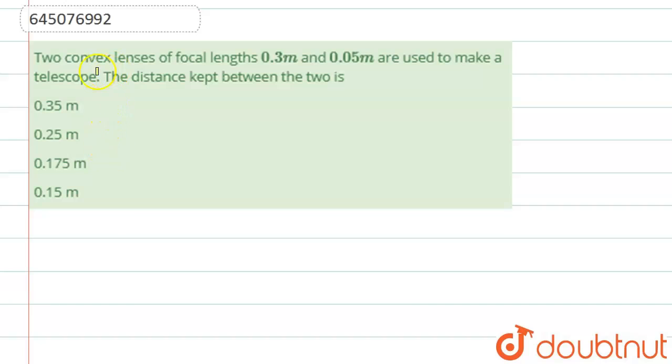Hello students, now we're going to see this question. The question says that two convex lenses of focal length 0.3 meters and 0.05 meters are used to make a telescope. The distance between the two is what we need to find.